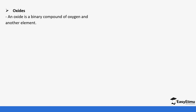Oxides are usually compounds of oxygen and another element. There are usually four categories of oxides. We have basic oxides that are basic in nature. This means that when you dissolve them in water they form hydroxide ions.